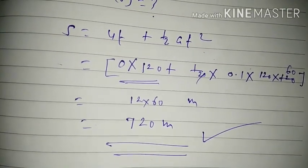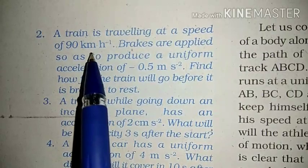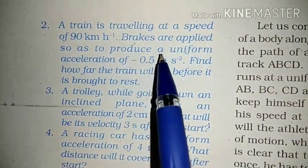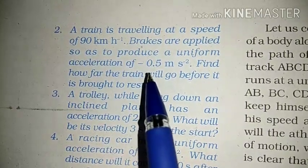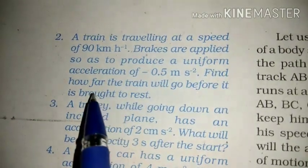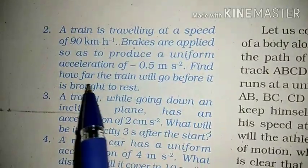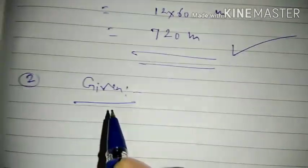Now the second question: a train is traveling at a speed of 90 kilometer per hour. Brakes are applied so as to produce a uniform acceleration of minus 0.5 meter per second square. When brakes are applied, speed reduces and acceleration becomes negative. Find how far the train will go before it is brought to rest. So here final velocity is 0 and we need to find distance.